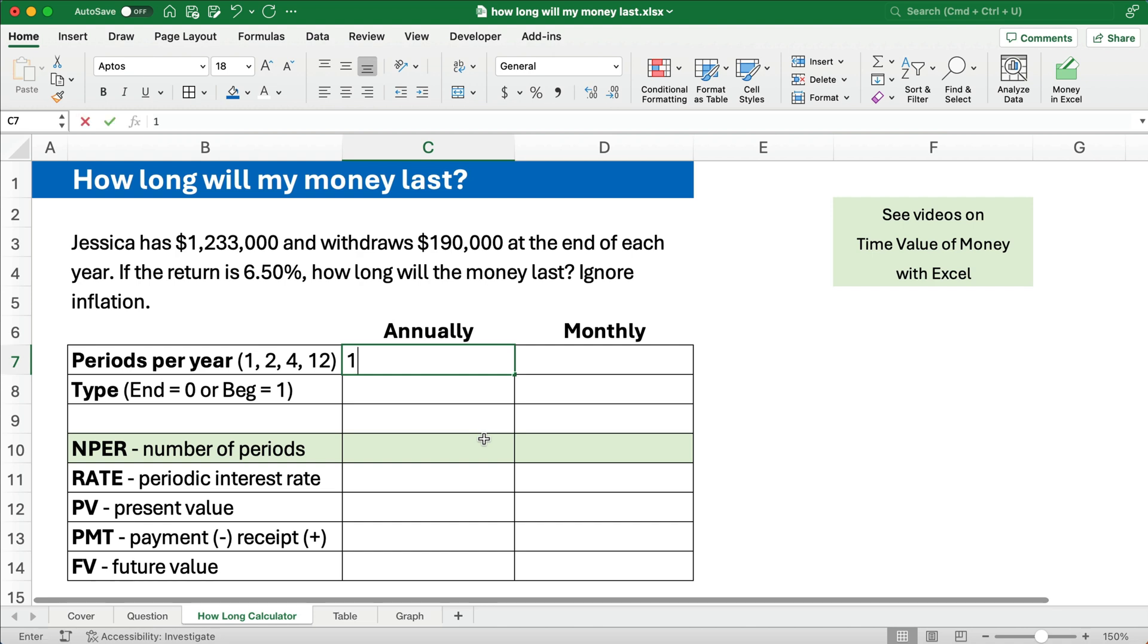So I'm going to do it annually. I'll do it monthly. Annually says I've got one period per year and payments happen at the end of the period. So the payments are all going to be withdrawals from the account. Now I have lots of videos on time value of money using Excel. So this is a time value of money problem. Check in the description below. Now we're going to calculate the number of periods. We need to know the periodic interest rate which is 6.5%. The present value of this problem is how much do we have right now? We have $1,233,000.